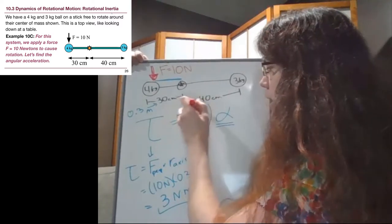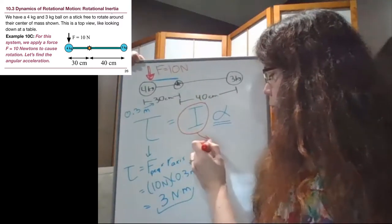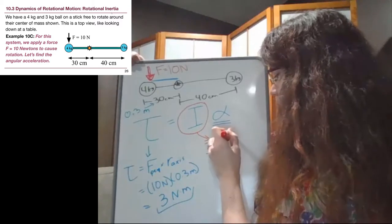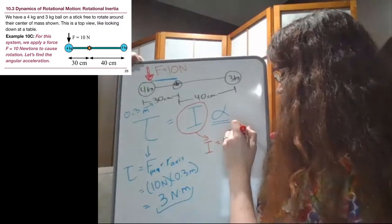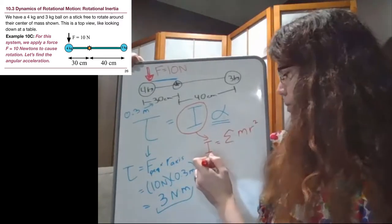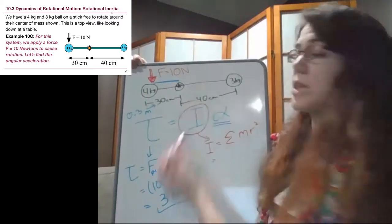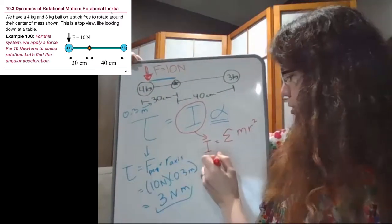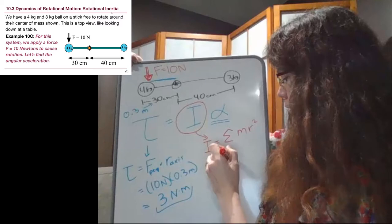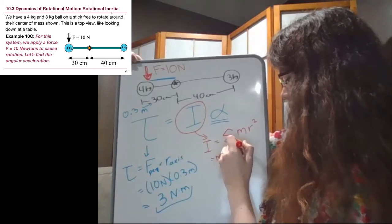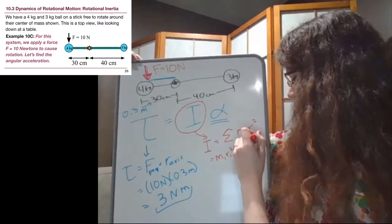So for the moment of inertia then, we want to think about the moment of inertia as this sum of all of the different masses times radius squared. And with two separate masses, that means we'll have two separate terms. So m1r1 squared plus m2r2 squared.